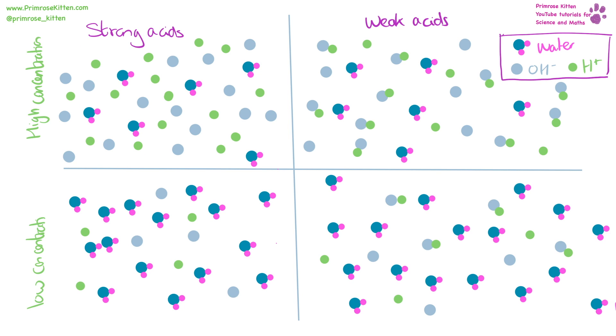Here we have strong and weak acids at high and low concentrations. So for our strong acid, we can see our hydroxide ions and our hydrogen ions are fully dissociated. They're not touching each other, they are separated. Here we have them at a high concentration, which means there are lots of hydroxide and hydrogen ions compared to very few water molecules. Here we have our strong acid, again fully dissociated but at a low concentration, meaning there aren't very many hydrogen or hydroxide ions in a lot of water.